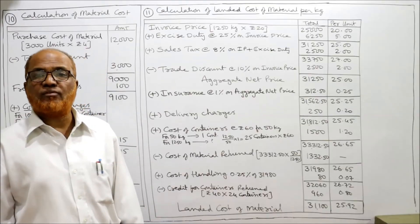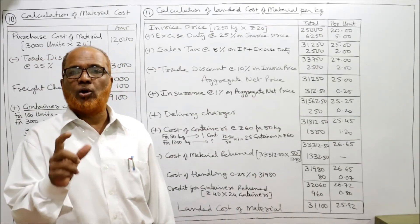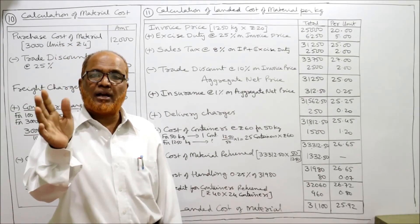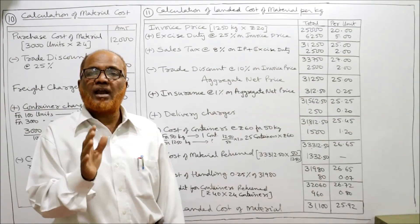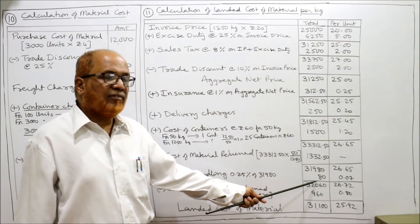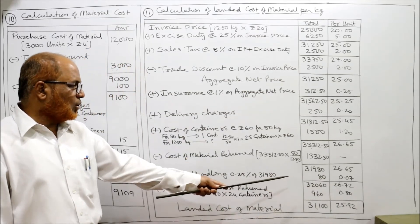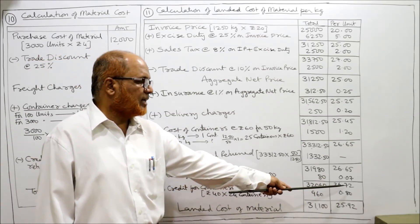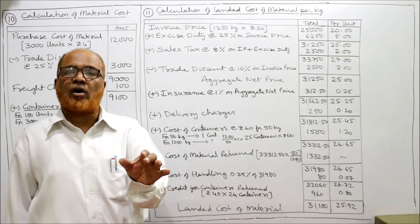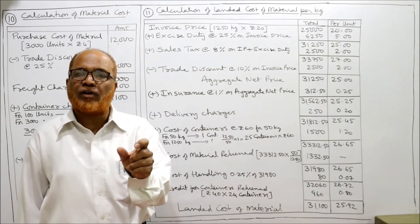Per kilogram: we now divide by 1200 kg, not 1250, because 50 kg was returned. So 80 ÷ 1200 = 0.07 rupees per kilogram approximately. Adding handling charges: total becomes 32,060 rupees and approximately 26.52 per kilogram.